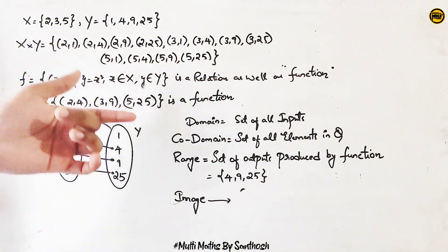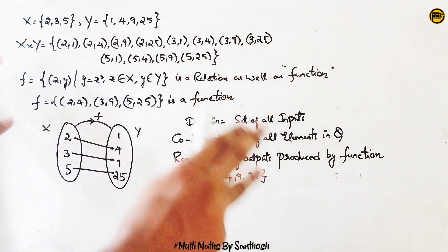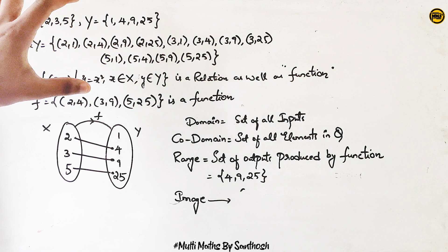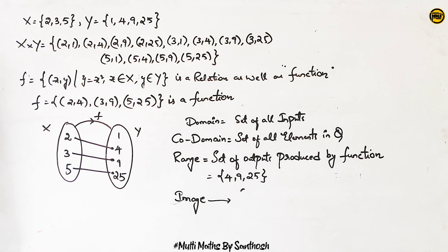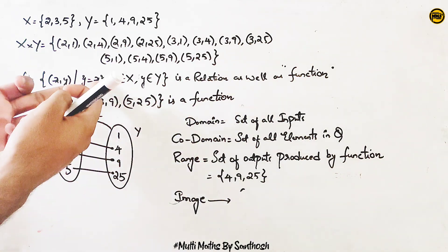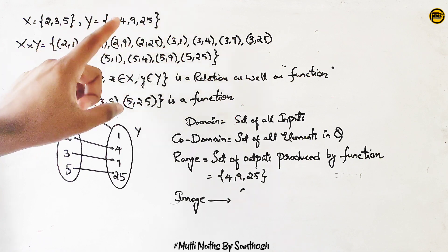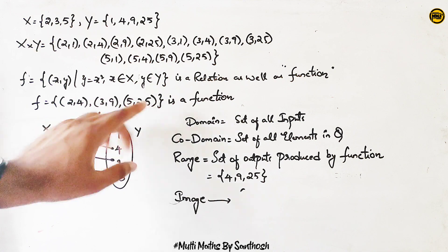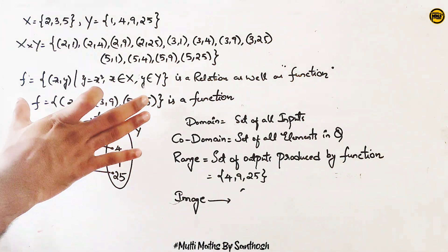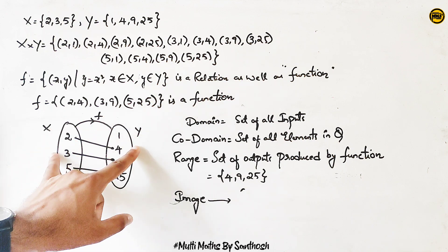This is the same thing. In the case of x squared, this relation satisfies the ordered pairs. Here we have the same function. Let's do this — first set X and second set Y. This is a function representation. It is a connection between two sets; this is a relationship between two sets.